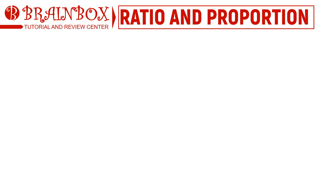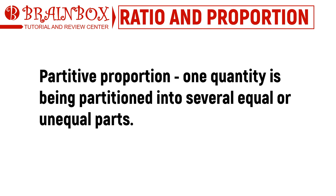The third type of proportion is the partitive proportion. Herein, one quantity is being partitioned into several equal or unequal parts. Partitive proportion is represented as a ratio of different numbers of partitions that can be added to get the totality of all the parts. In this type of proportion, there is a constant of proportionality which is commonly an unknown variable.